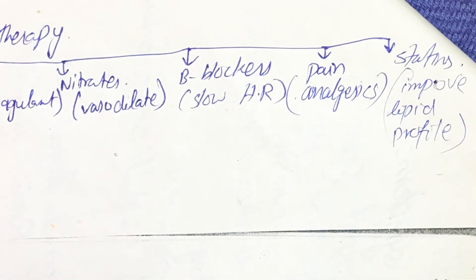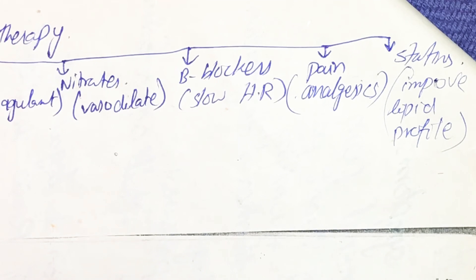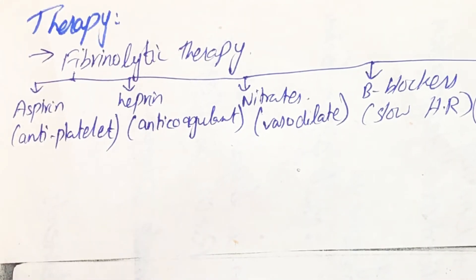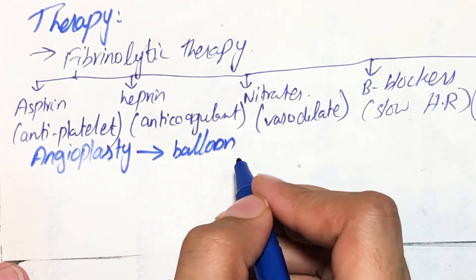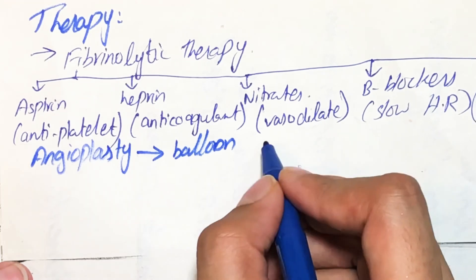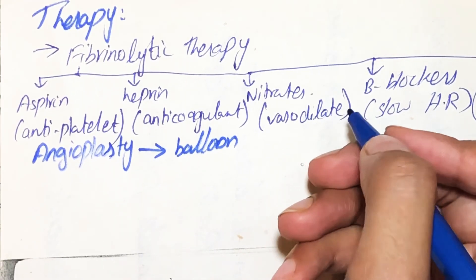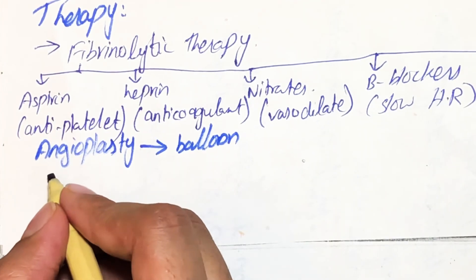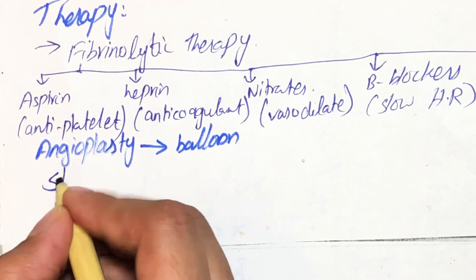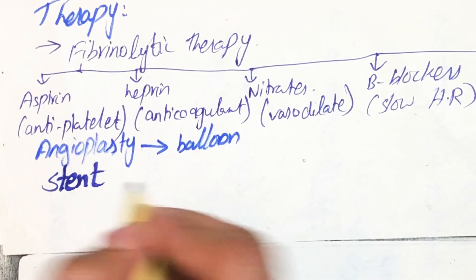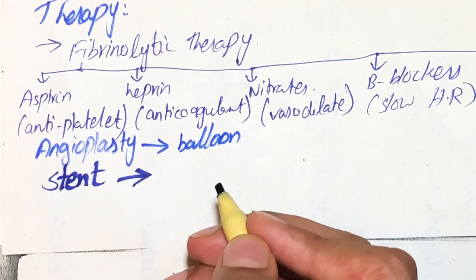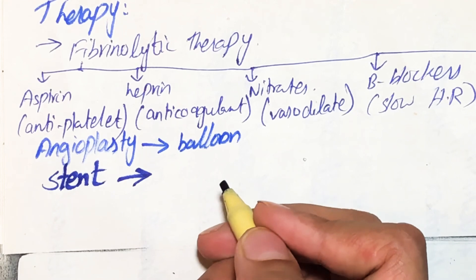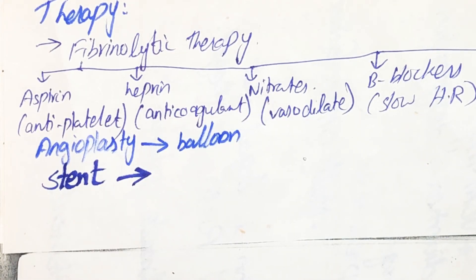These are some drugs used in the treatment of this syndrome. Another treatment option is angioplasty, where a balloon is used to inflate and open up the blocked artery, relieving blood flow. A stent, made of metal or plastic, can also be used to open the blocked passage of blood. In this way it can relieve acute coronary syndrome. This was all about acute coronary syndrome — if you have any questions, let me know in the comments below. Thank you for watching.